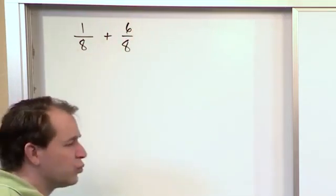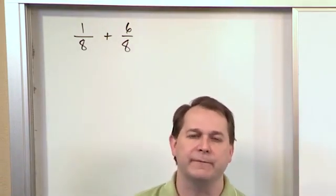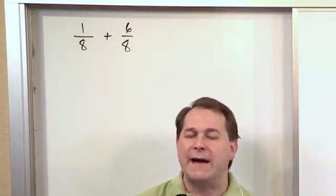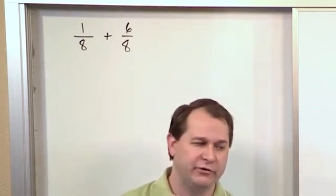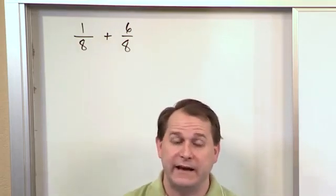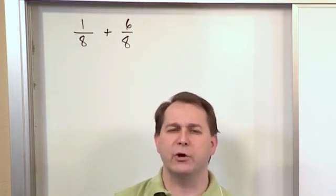Now the number one rule with adding fractions together, the number one thing that you just have to remember is that the denominator, in this case the 8, they have to be the same number between the two fractions before you can add these fractions together. In this case we have an 8 for the denominator in both places so we can add this fraction with no problems.